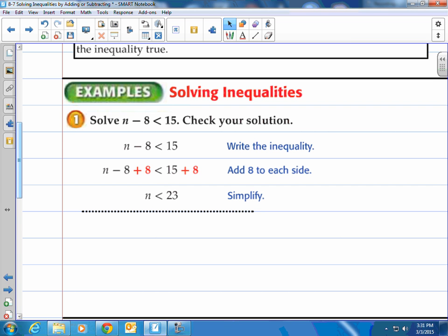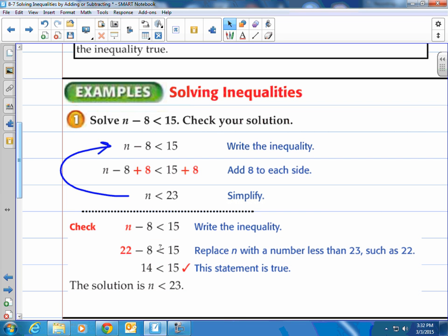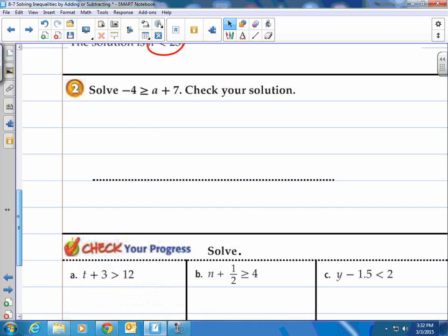Now any number less than 23 will work in the original inequality. So check that out. We're gonna check it by taking a number. It says replace n with a number less than 23 such as 22. You can use any number that's less than 23. Plug it on in and you'll see that it will still say that that left side is gonna be less than 15. So the solution is, and notice it, it's not just a number it's any number less than 23. So if you think about these they have lots of solutions. There's lots of numbers that are less than 23. As a matter of fact there's infinitely many solutions to this. Any number less than 23, not just one answer. That's how we say it. That's why you have to circle both pieces.